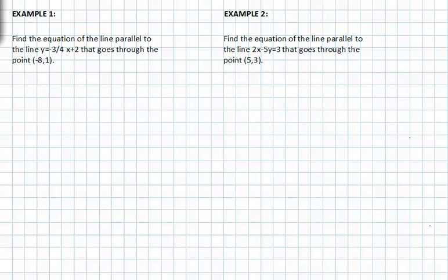In example one, we're asked to find the equation of the line parallel to the line y equals negative three-fourths x plus two that goes through the point negative eight, one.